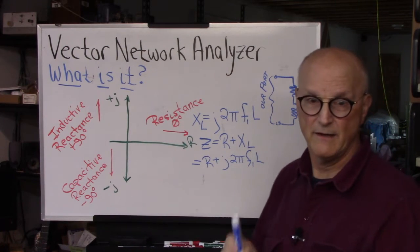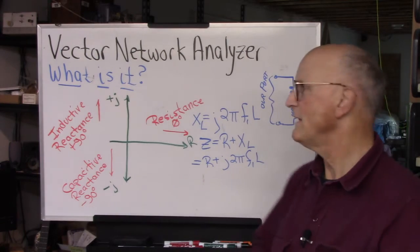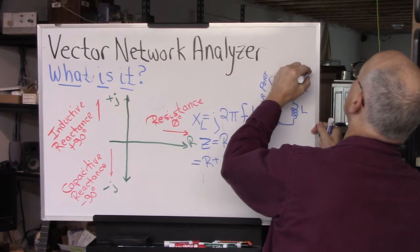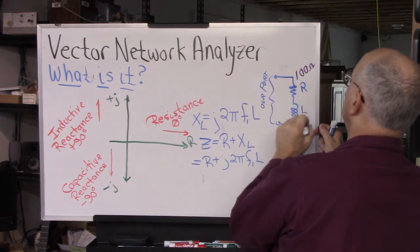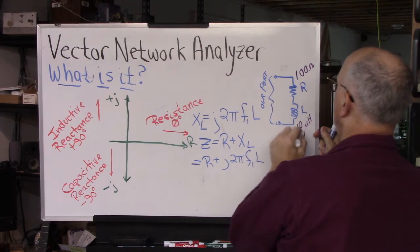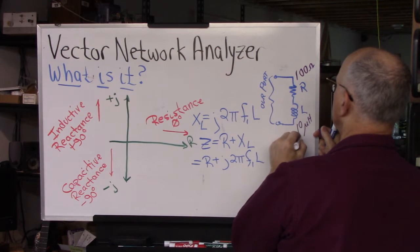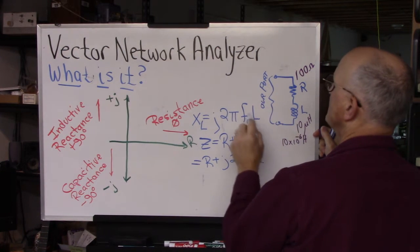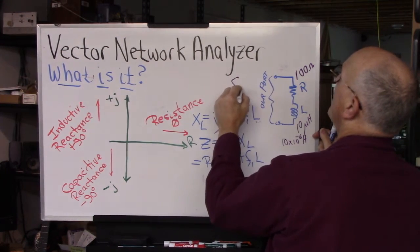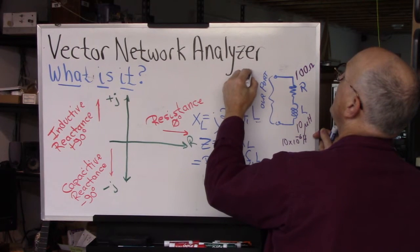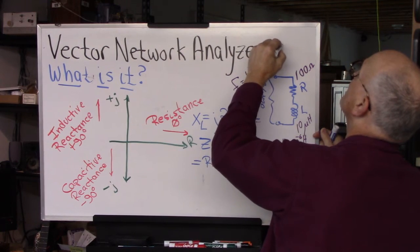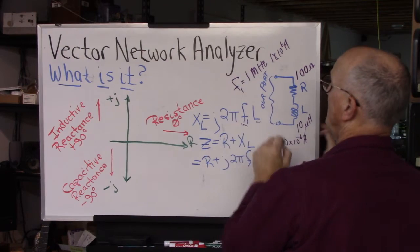And so we have a real part, and we have an imaginary part. Now, let's just say for giggles that our resistor is 100 ohms, and our inductor is 10 micro Henrys, which is 10 times 10 to the minus 6 Henrys, because this has to be in Henrys. And we are interested with F1 equal 1 megahertz, which is 1 times 10 to the sixth hertz, because this has to be in Hertz.